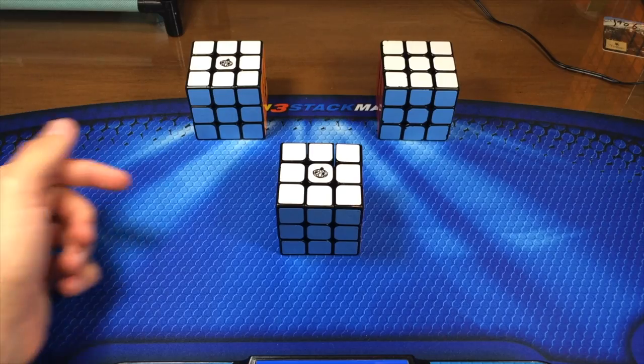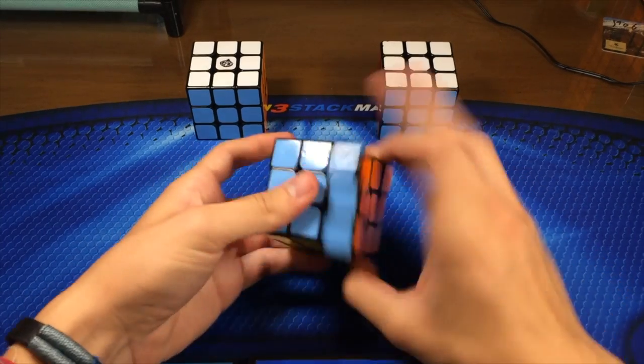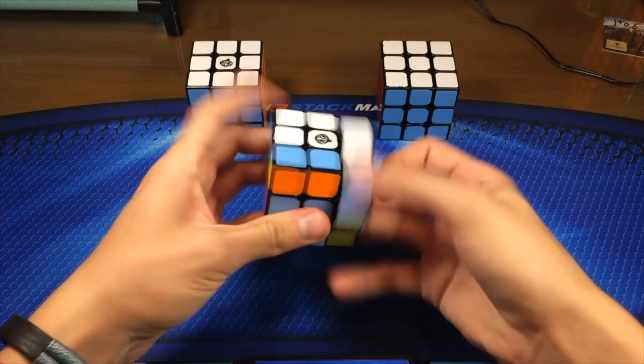So the first word that comes to mind when I think of Mei Yang is speed. Compared to the Yu Yang, this cube is a lot faster and a lot lighter. It's also a lot smoother after being broken in.